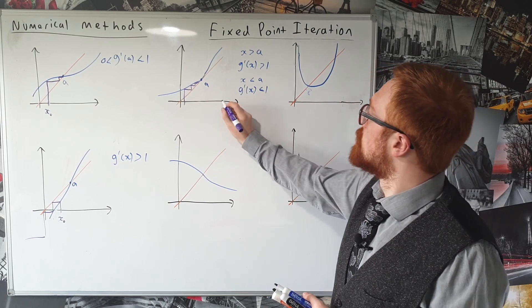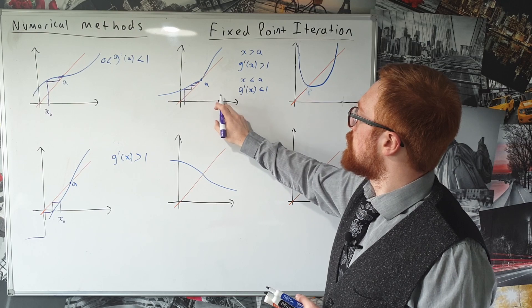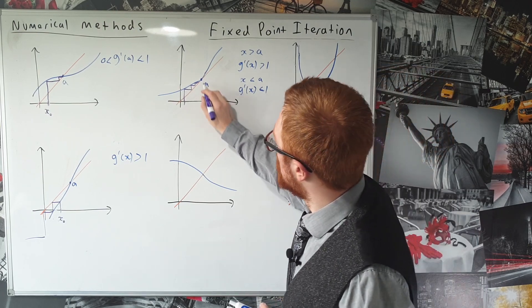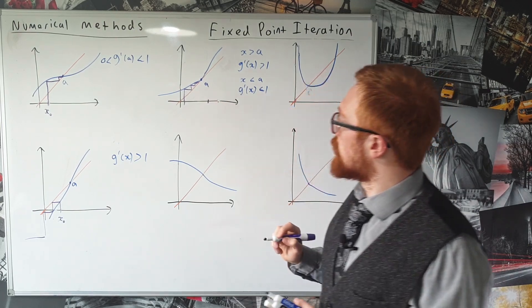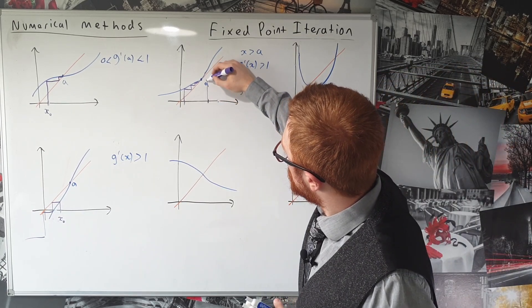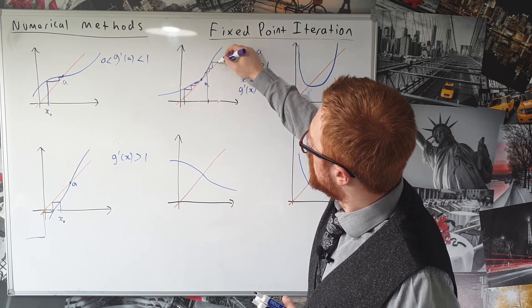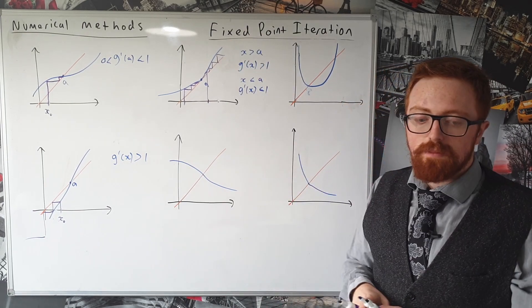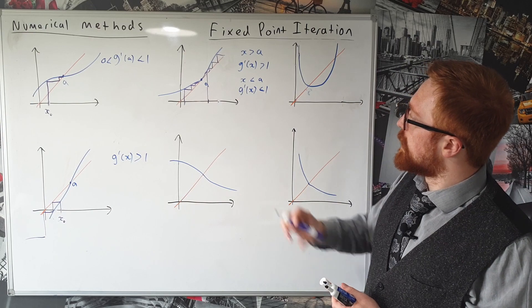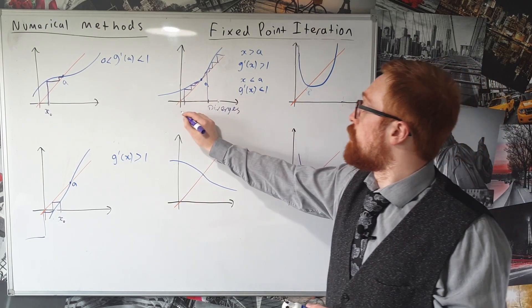But if we pick some x that's greater than A, actually it doesn't matter how close we are to the solution, even if we start quite close to our point A. If we go straight up to the curve, and then across, there we go. So that one's going to diverge. So that one diverges, and that one converges.